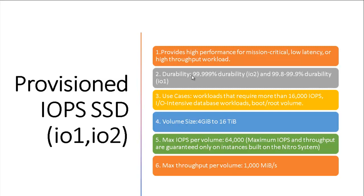Next is Provisioned IOPS SSD, types IO1 and IO2. IO1 and IO2 have the same functions overall, but IO2 delivers better performance than IO1. Provisioned IOPS SSD provides high performance for mission-critical, low-latency or high-throughput workloads. IO2 durability is 99.999%, while IO1 durability is 99.8% to 99.9% — so IO2's durability is significantly better.